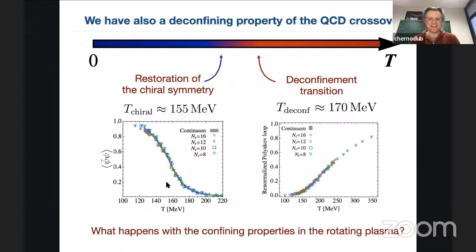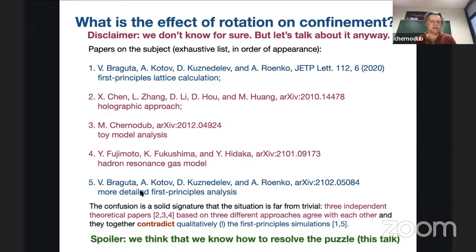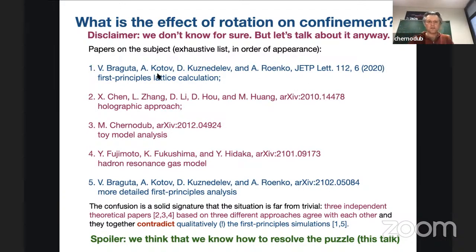Now for the bad thing — confinement. To study confinement we don't need fermions. There are some papers on confinement with rotation, but it's more difficult because we don't have so many beautiful models. We have the Polyakov loop model in 2+1 dimensions for monopole confinement, the 't Hooft vortex mechanism, the dual superconductor picture. The first work on this subject was by the Moscow group — Braguta, Kotov, Kuznedelev, and Rayenko — published in JETP Letters three years ago. Then a holographic approach appeared from a Chinese group.